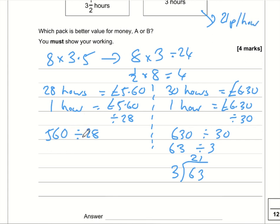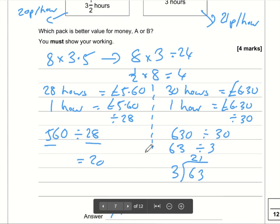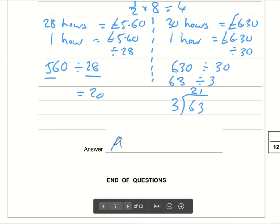Now what is £5.60 divided by 28? Now that seems a little bit horrible. However, if you know that 56 is 28 doubled, then that means 56 divided by 28 is 2. So £5.60 divided by 28 is 20. So this works out as 20 pence per hour. So which pack is better value for money is going to be answer A.